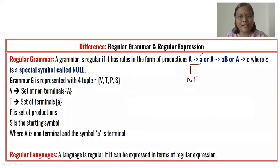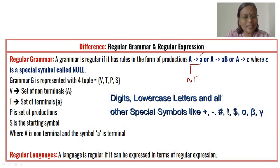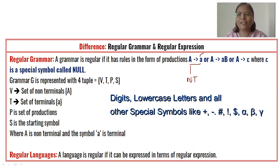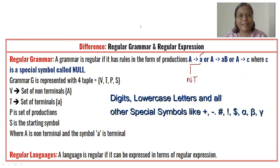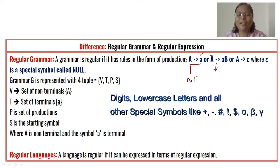Terminals include digits, lowercase letters, and all other special symbols such as alpha, beta, and gamma. Non-terminals must start with a capitalized or uppercase letter. The second form is: 'A' produces a small 'a' followed by capital 'B' — that is, a non-terminal producing a terminal followed by a non-terminal. The arrow mark is termed 'produces,' making this a production.